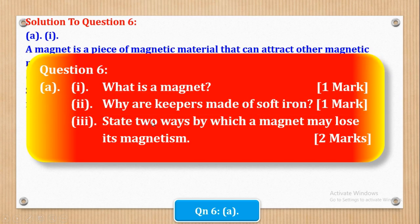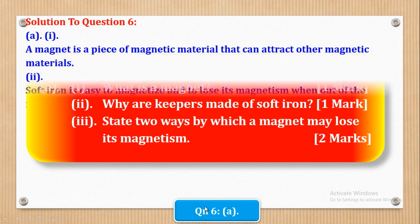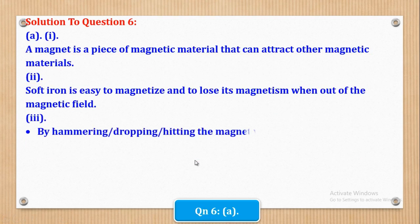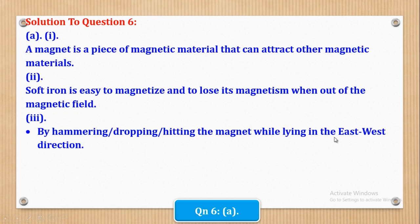Then Roman 3 says, state two ways by which a magnet may lose its magnetism. So one of the ways is by hammering, dropping, or hitting the magnet while lying in the east-west direction. That word, east-west direction. Then next is by heating the magnet to redness. So you heat until it is red hot.